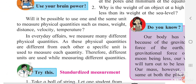Will it be possible to use one and the same unit to measure physical quantities such as mass, weight, distance, velocity, and temperature? For example, if I say give me 2 kilometers of milk, that does not make sense. Kilometer is used for measuring distance, liter is used specifically for measuring liquid substances, and kilograms and grams are used to measure solid substances. These units have been specified accordingly.